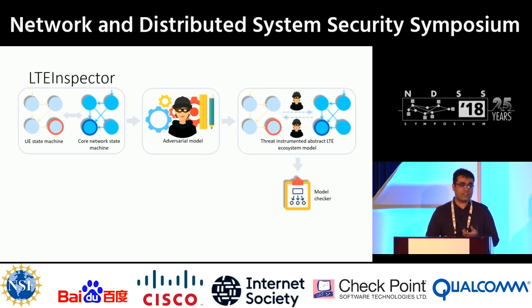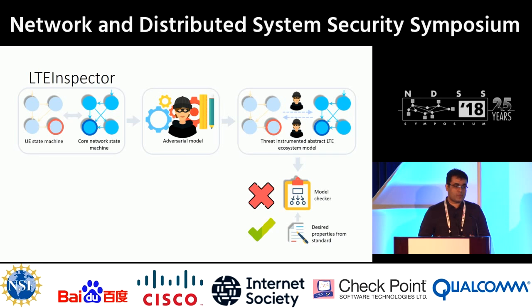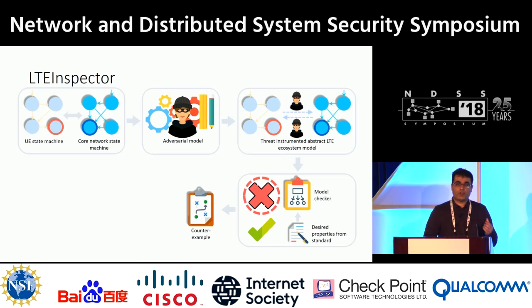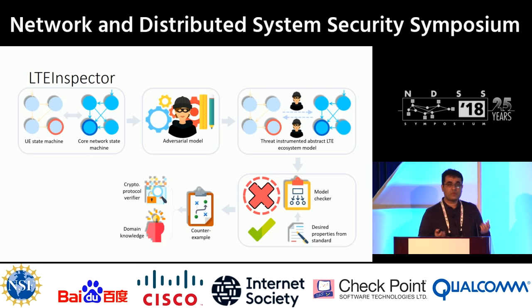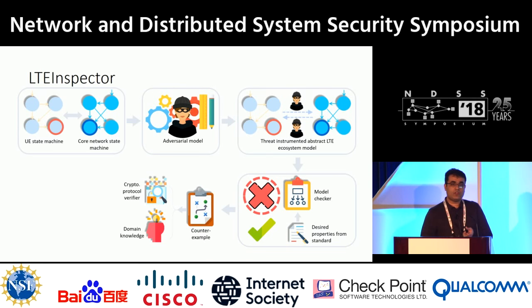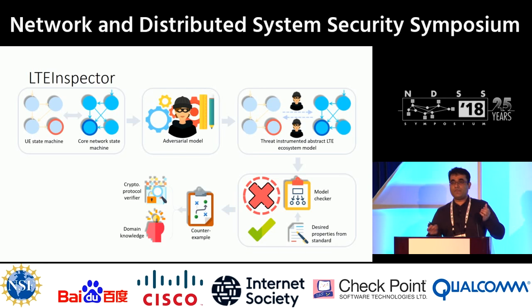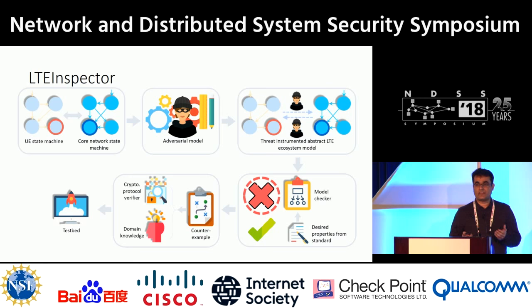We feed the instrumented threat model to the model checker, which takes a set of properties from the specification and verifies them. If there is a violation, the model checker provides a counterexample — a sequence of actions the adversary should follow to perform an attack. However, in the initial threat model we did not have cryptographic proficiency, so the attack steps found may not be feasible under cryptographic assumptions. We therefore model and check each attack step with the cryptographic protocol verifier. If domain knowledge tells us the message has no integrity or secrecy protection, we use that directly. After verification, we take the attack to a real testbed to confirm it is feasible in practice.